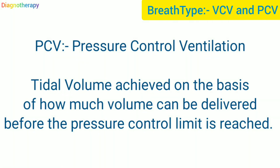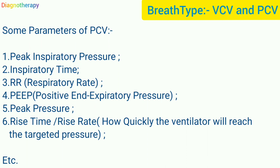In pressure control ventilation, the tidal volume is achieved on the basis of how much volume can be delivered before the pressure control limit is reached. Parameters include: peak inspiratory pressure, inspiratory time, respiratory rate, PEEP (positive end-expiratory pressure), peak pressure, and rise time or rise rate — that is, how quickly the ventilator reaches the targeted pressure. Other settings depend on the ventilator company and model, and terminology may differ slightly between ventilators.